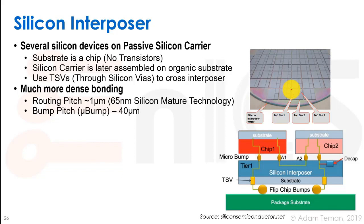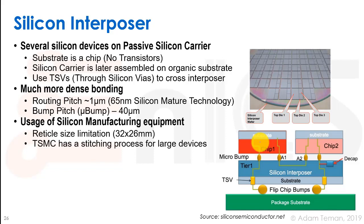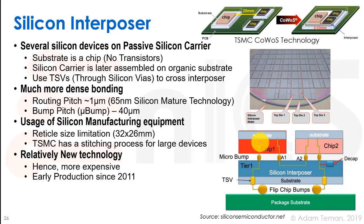This provides much more dense bonding than MCM. We can achieve a routing pitch of about 1 micron using a 65 nanometer interposer, which is much cheaper than a 7 nanometer or 16 nanometer chip. We can get micro bumps with a pitch of about 40 microns, which is very small. Standard silicon manufacturing equipment can be used. TSMC provides this technology called CoWoS — details are available on their website.